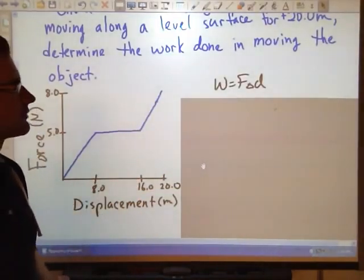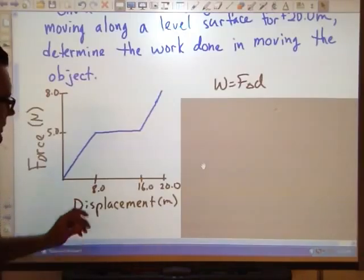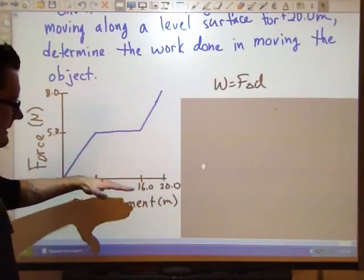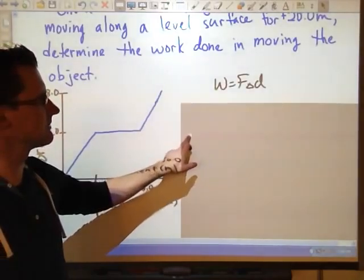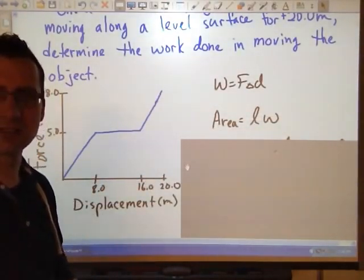We know that work is equal to force multiplied by displacement, and it just so happens on our graph here that force is the y-axis, d is the x-axis. Because it's very similar to taking the area underneath here. And we did that before.